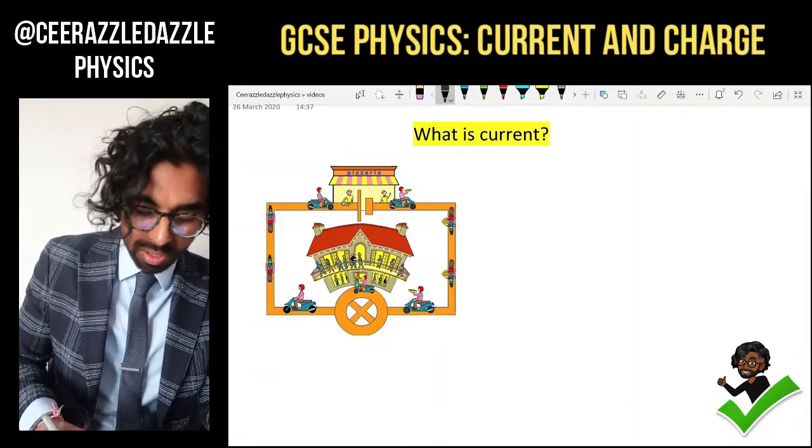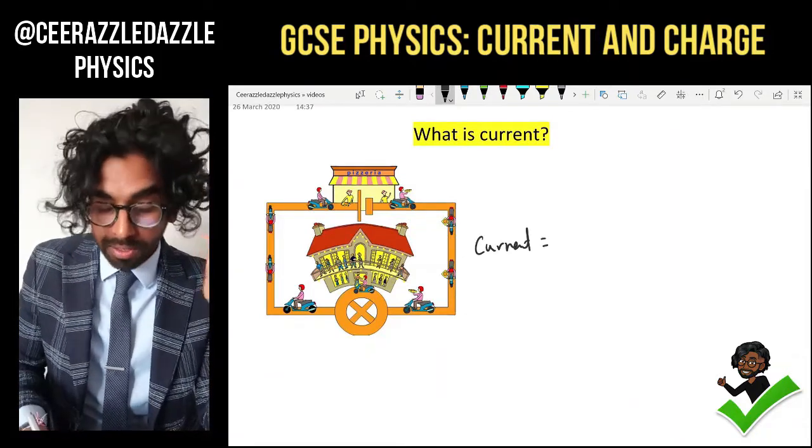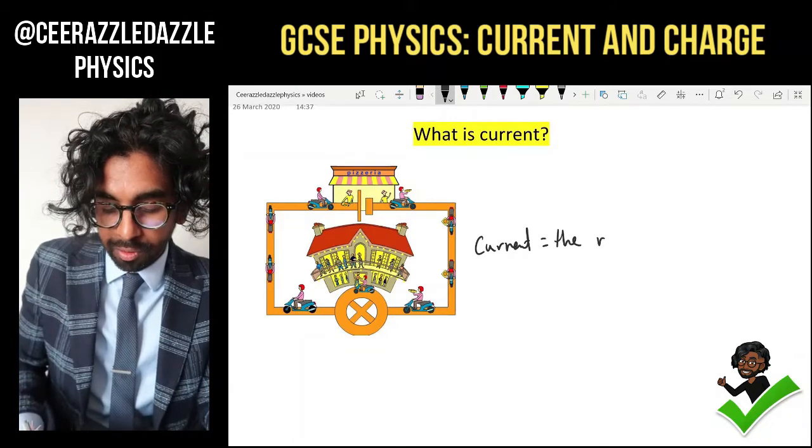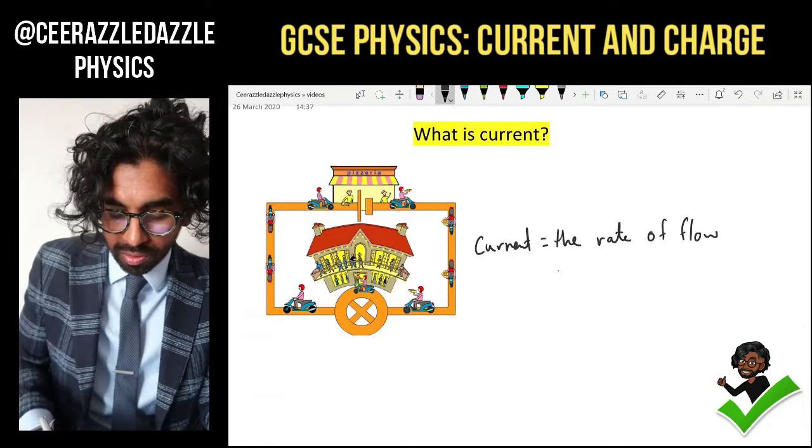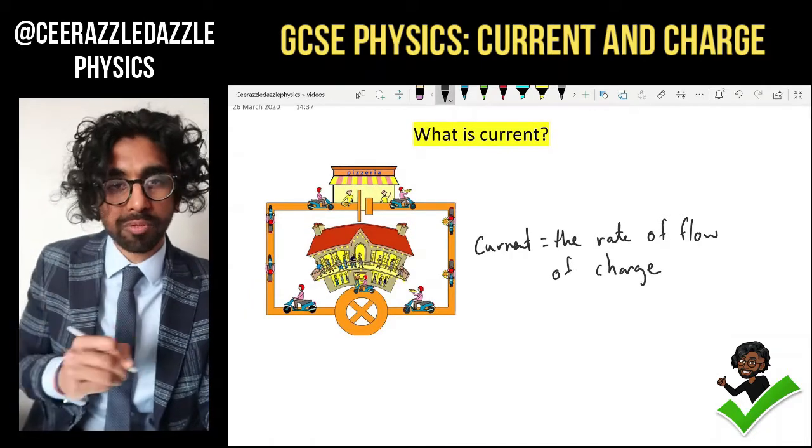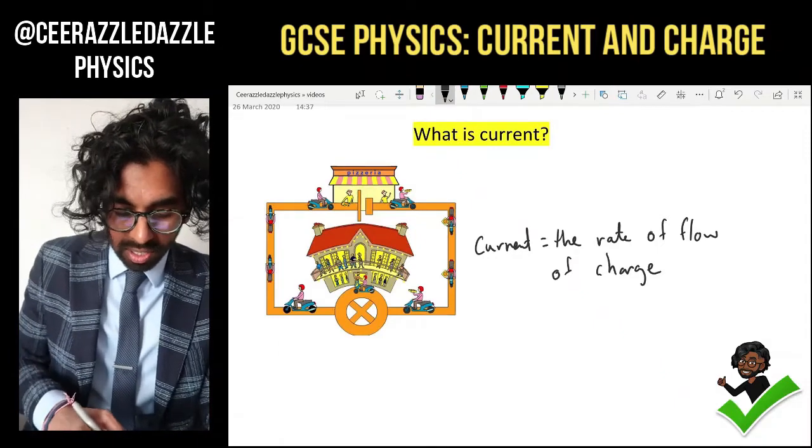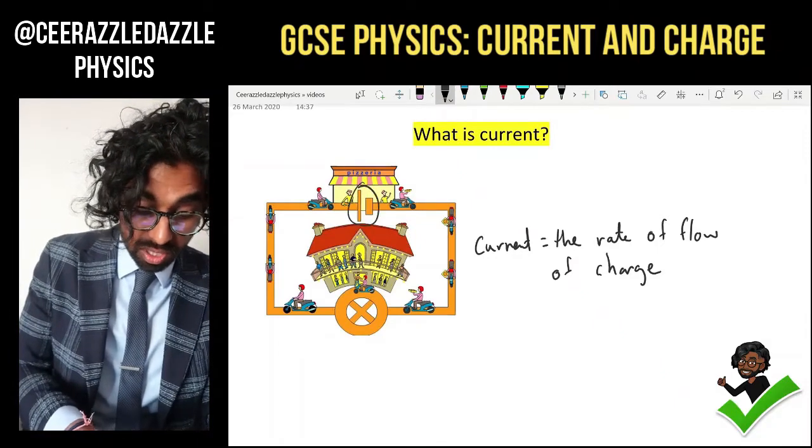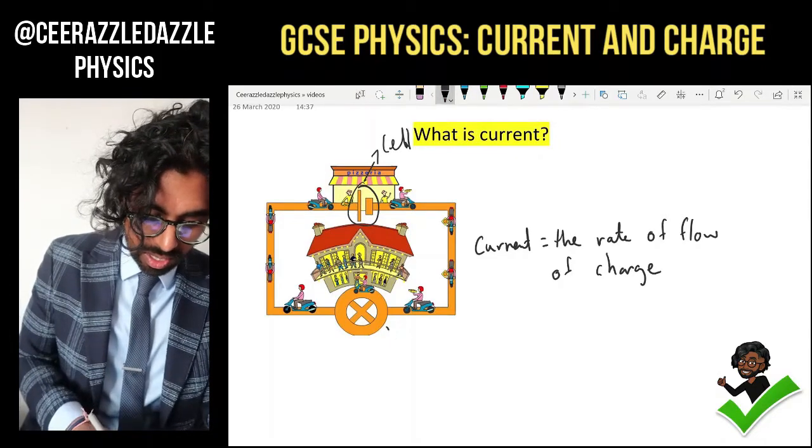Current, let's get the pen out, current is simply the rate of flow of charge. So it's basically how fast the charge is flowing around your circuit. You can see on this diagram on the left hand side, this is meant to represent, well this is a cell over here and this is a bulb.